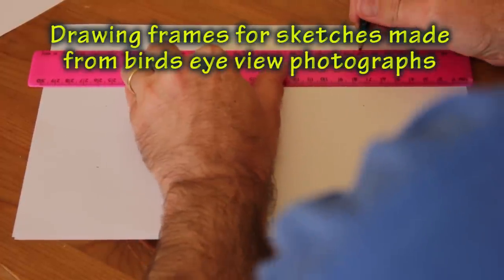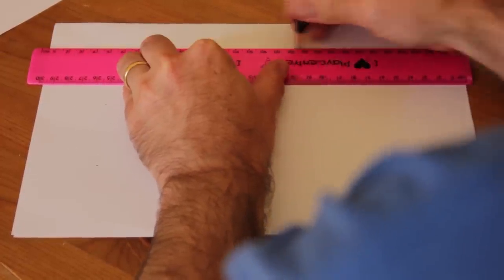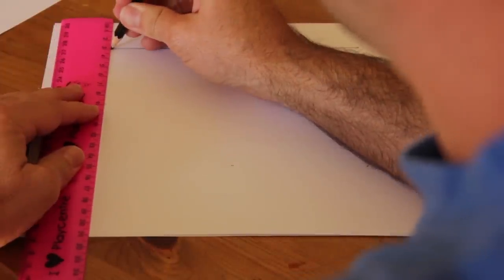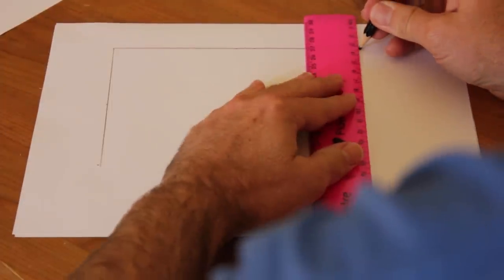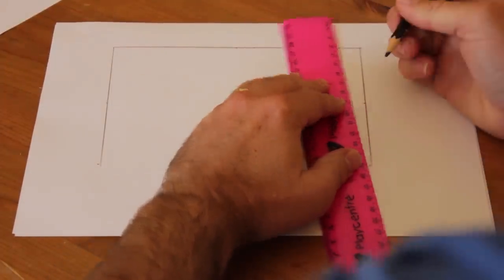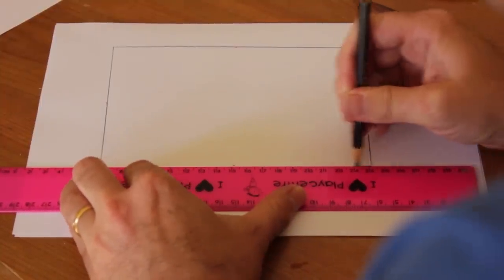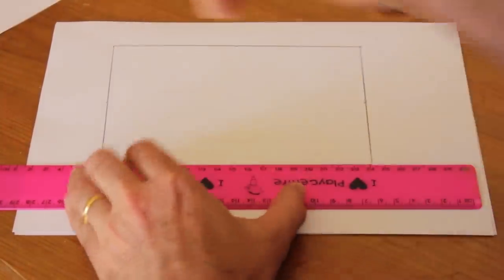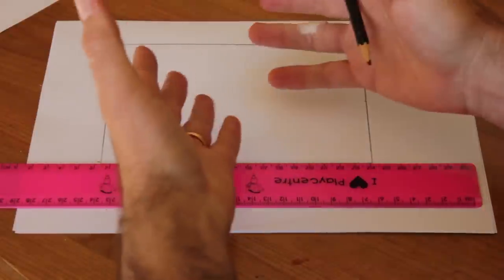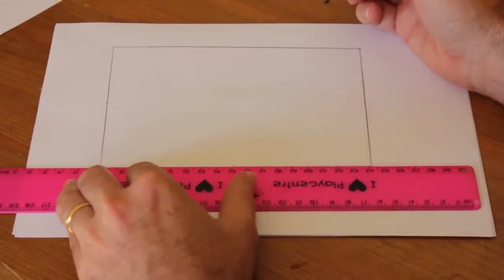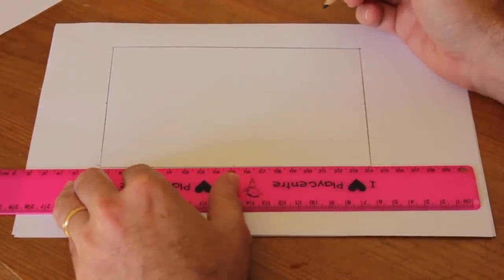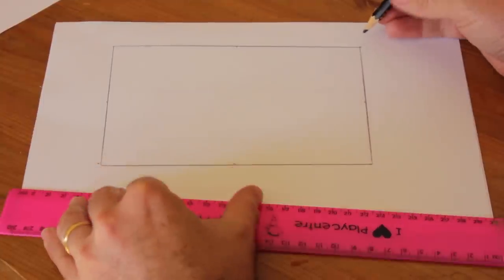Now if you're drawing from a bird's eye view, you want to draw a frame that is the same shape as the photograph that you're drawing from. Now in this case the photograph I'm drawing from is 1800 by 1200 pixels, so therefore I'll use a ratio to convert to my drawing and I'll do mine by 18 centimeters by 12 centimeters.